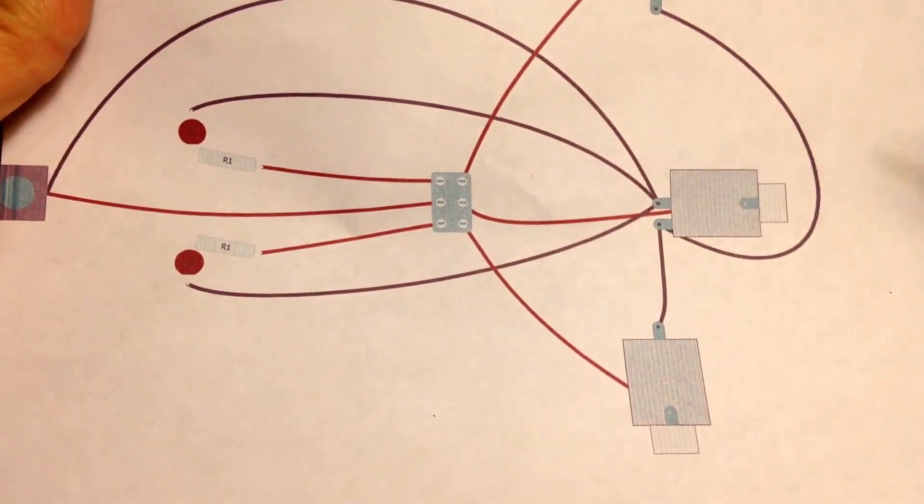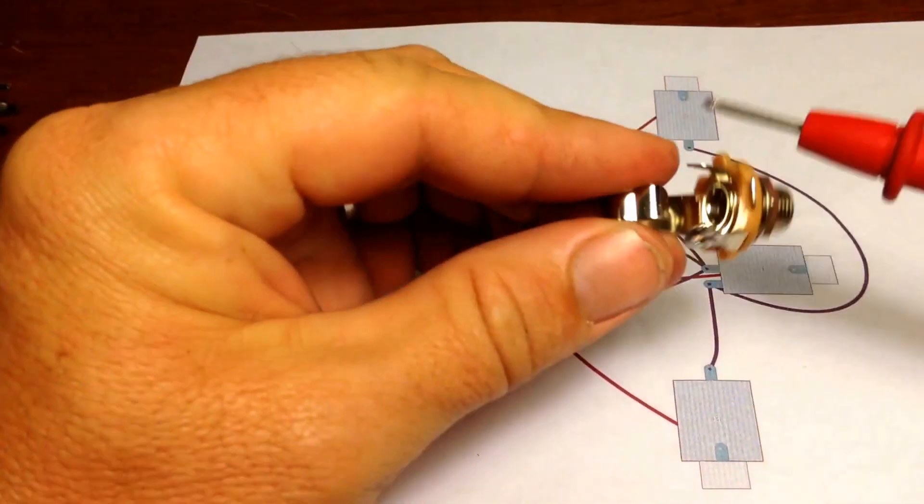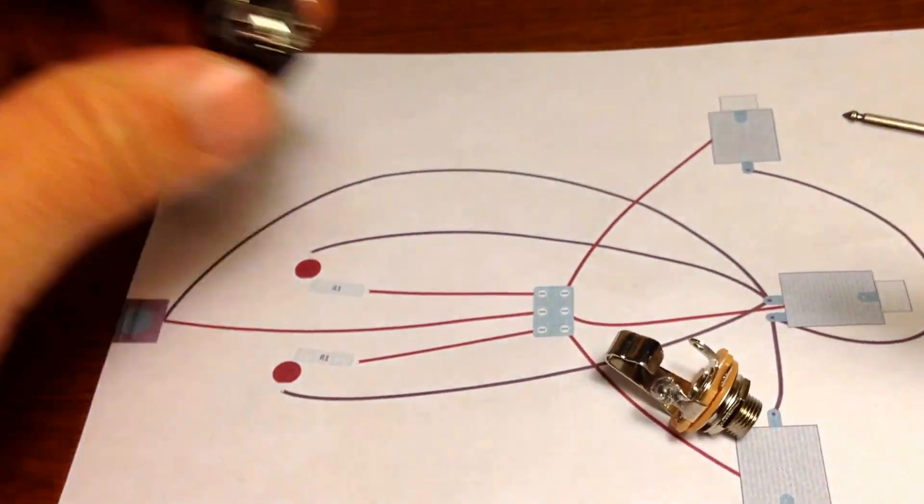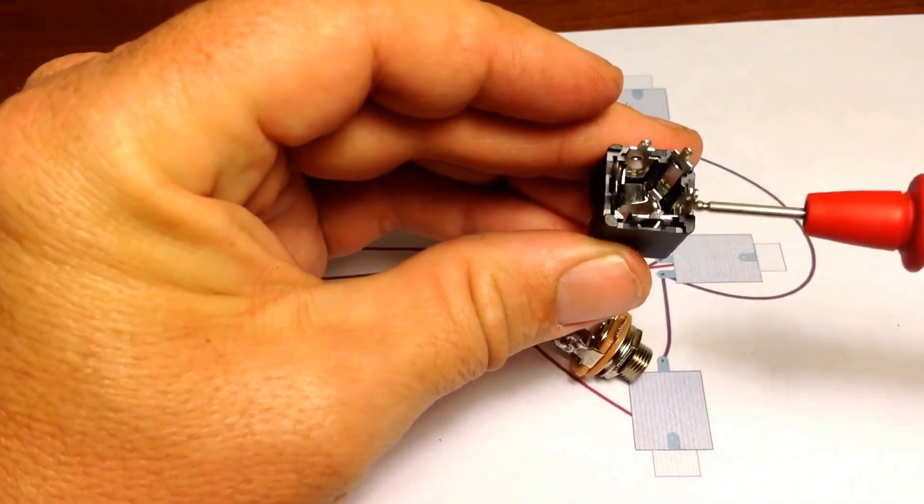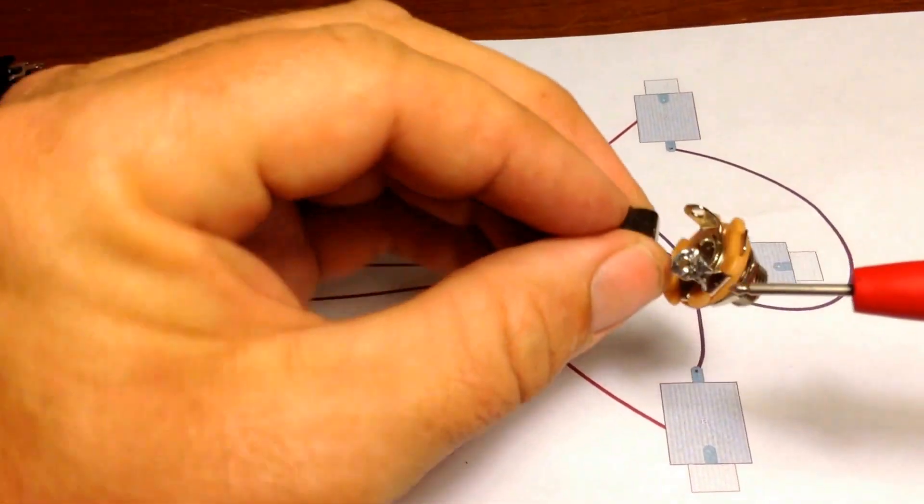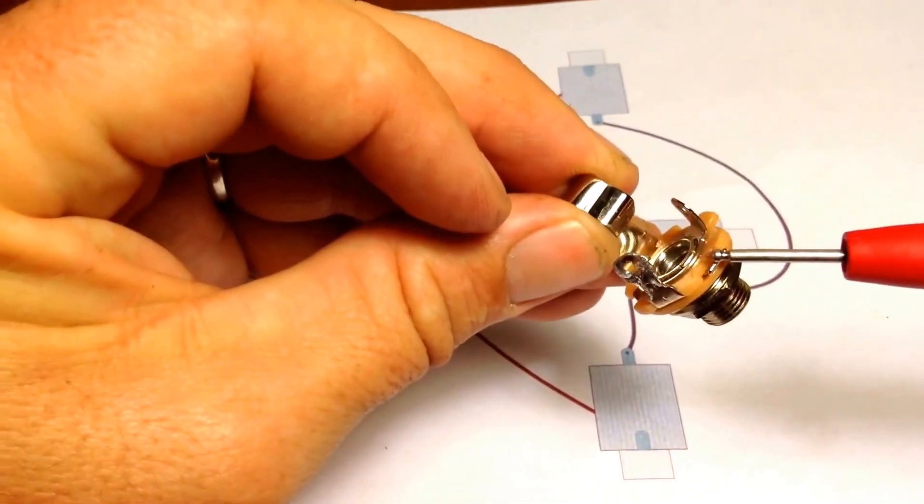And see this one has two tabs and then the positive runs under here. So what you're gonna do is if you have a stereo jack like this, these are easier by the way instead of these enclosed ones because these enclosed ones have five tabs.